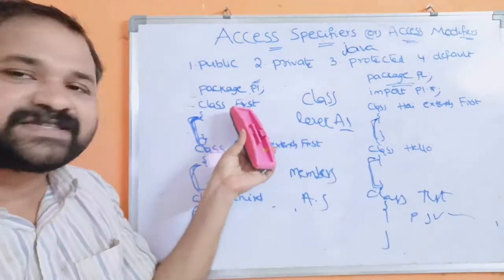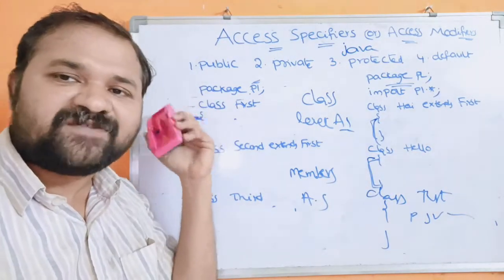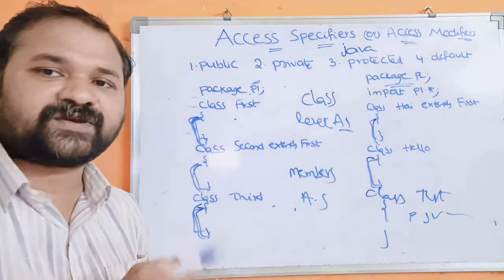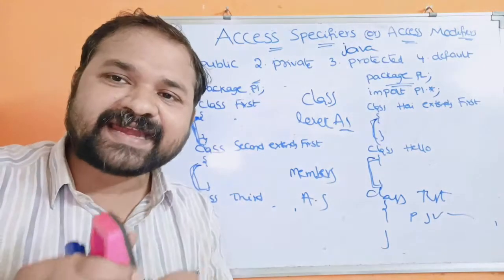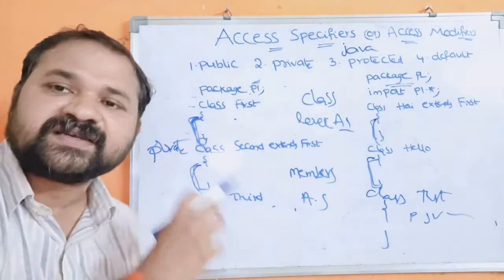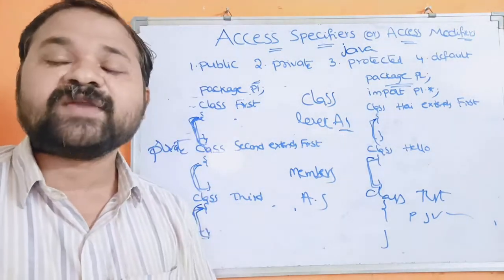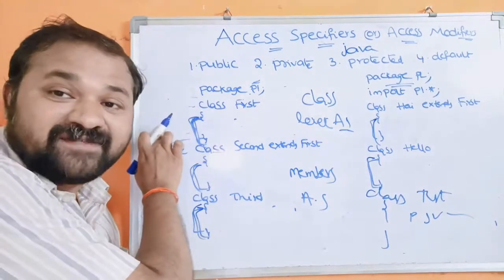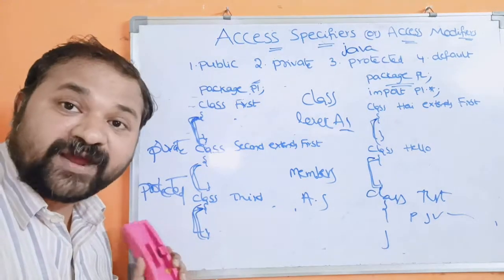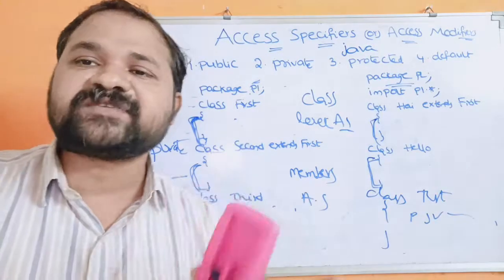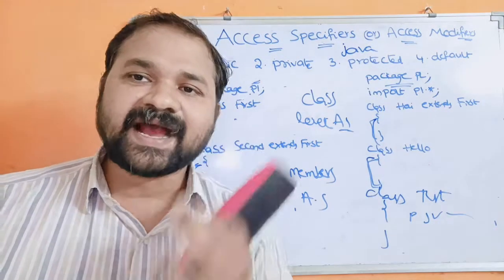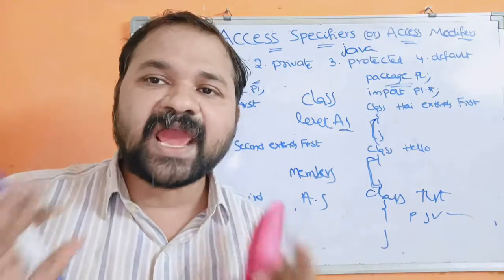If no access specifier is specified, the class is default and accessible only within this package. It is not possible to declare a class as private or protected. If you declare a class as private or protected, the compiler will give an error message. So class-level access specifiers are only public and default.